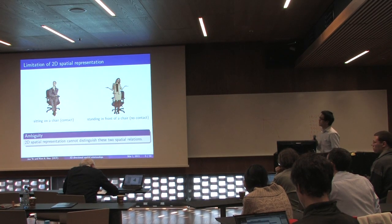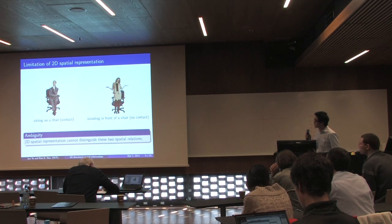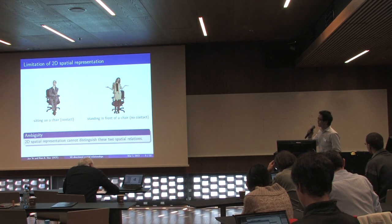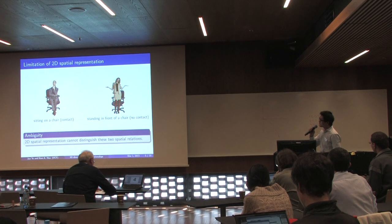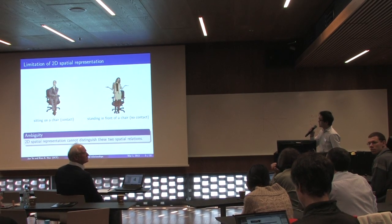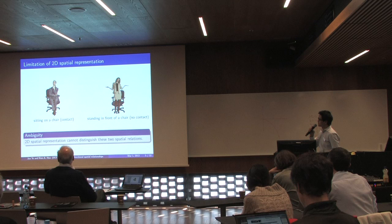Let's take a look at two images. In the left image there is a man sitting on a chair; on the right there is a woman standing in front of the chair. From the perspective of a 2D image, it is difficult for traditional 2D spatial representation to distinguish these two different scenarios, because for a 2D spatial view, both objects — the person and the chair — overlap each other.